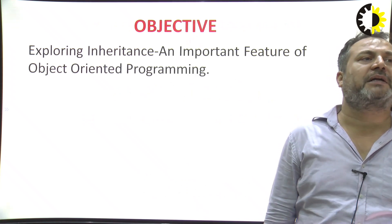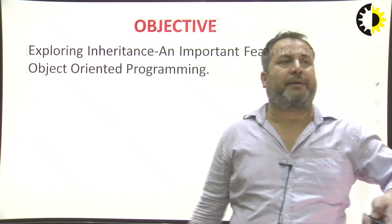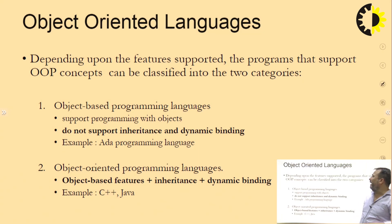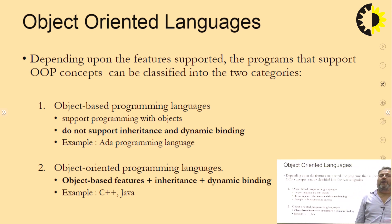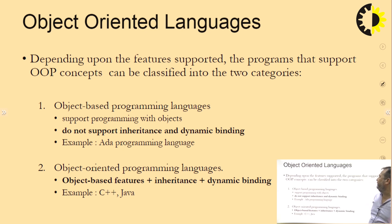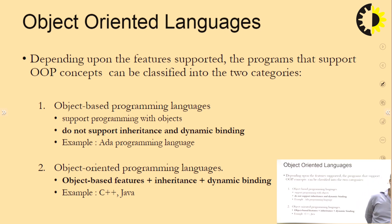The objective here is we have just explored inheritance in object-oriented programming. Before inheritance, let us see what are the languages. Object-oriented languages, depending on the features supported, can be classified into two categories: one is object-based programming language, and second one is object-oriented programming language.